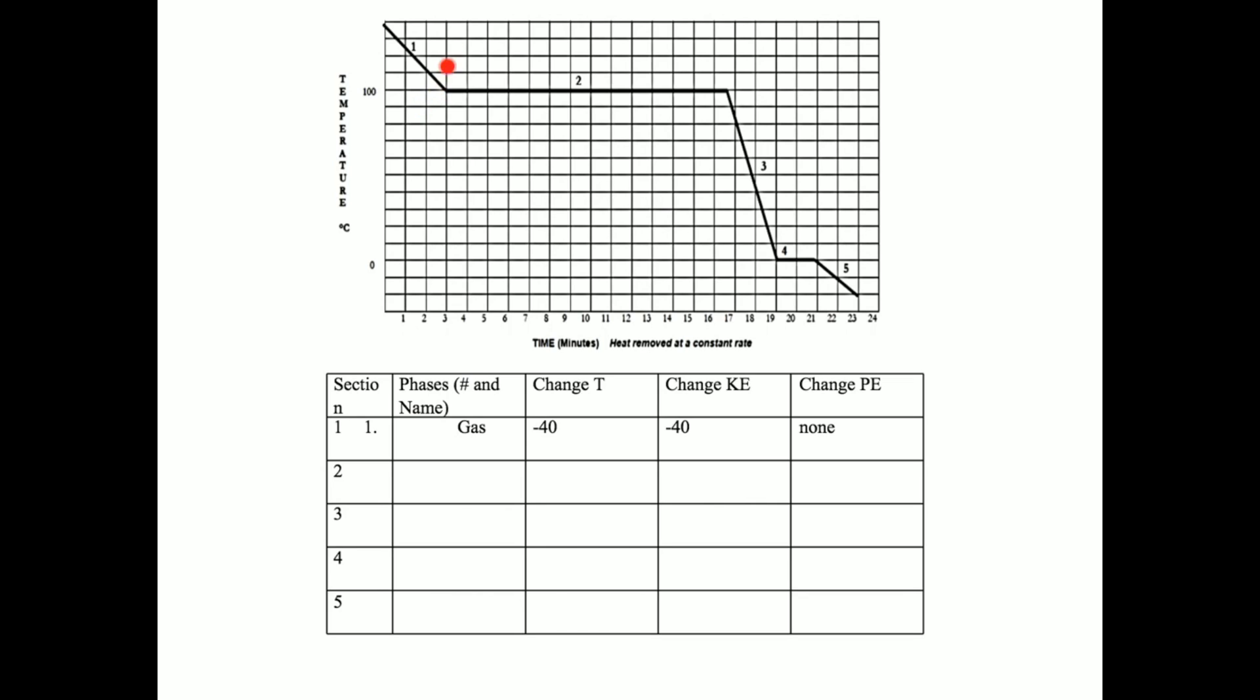We begin our cooling curve in the gaseous state. We will move where the kinetic energy or the temperature decreases as the potential energy remains constant. When we move to the plateau, number two, what we will have is a potential energy change. But since this graph is decreasing, our potential energy will also be decreasing. So here, our potential energy decreases as our kinetic energy is constant. This is when the gaseous state turns into a liquid. The liquid cannot begin to cool until all the vapor has been converted to liquid.